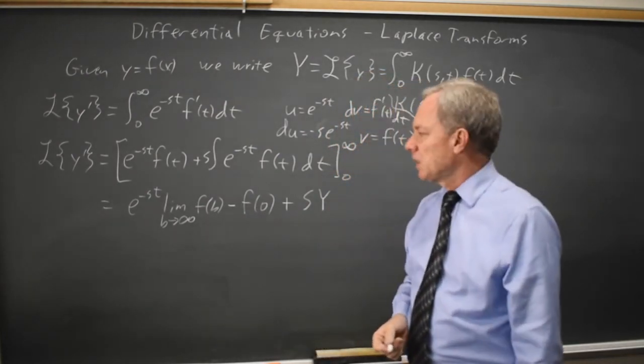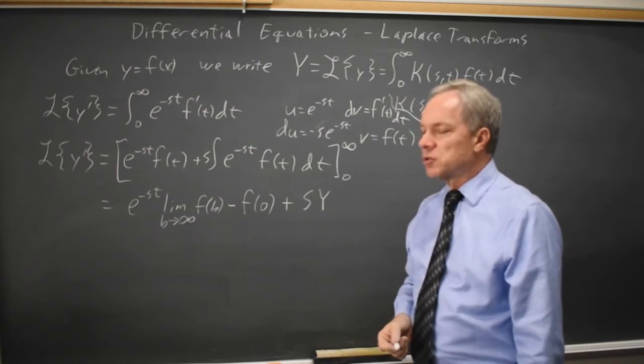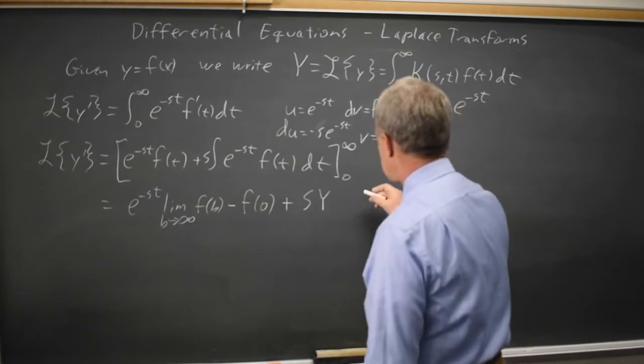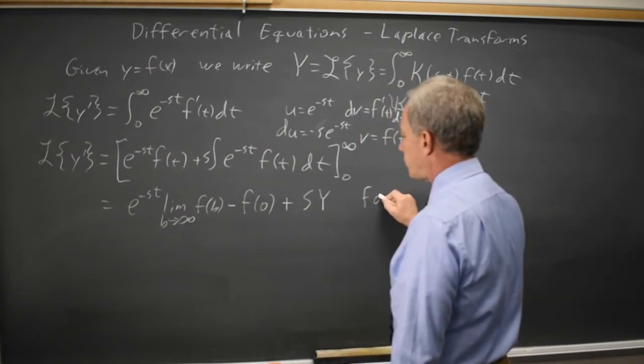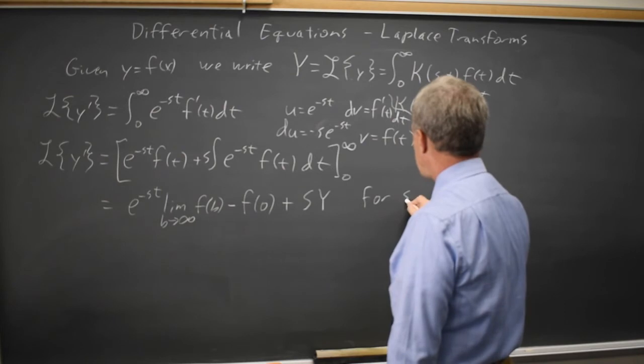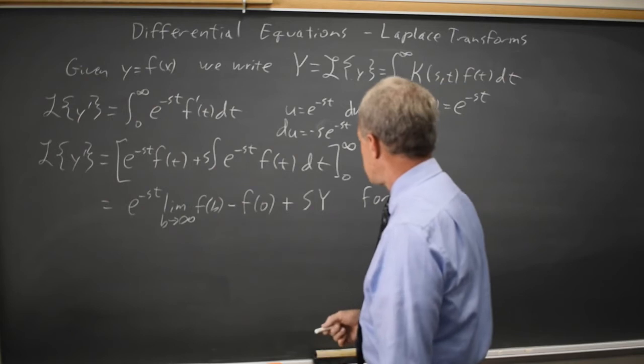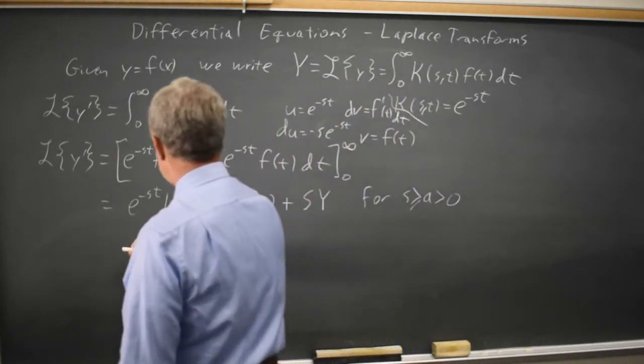Now, if f of t grows no faster than exponential for s greater than some a, which has to be positive, this limit is 0.